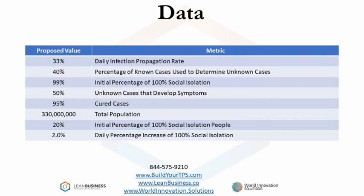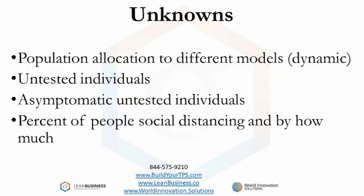There are two metrics that work together: the initial percentage of 100% social isolation people, and the daily percentage increase of 100% social isolation. In other words, there is a certain percentage of the population that severely isolates themselves and therefore has no risk of infection. That population grows as the infection gets worse and people become more educated. Data that is dynamic, like population movement, is difficult to model because it's difficult to predict. Also, artificial physical areas expanding and contracting makes it difficult to model.